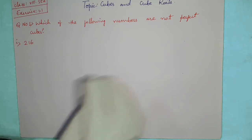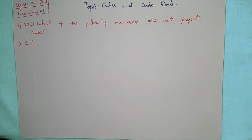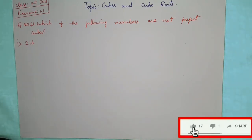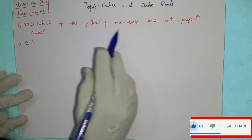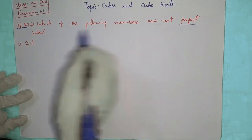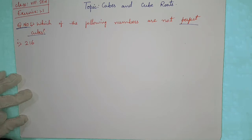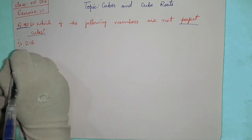Hello everyone, now we are going to see the cubes and cube roots, first exercise 1.1, first question: which of the following numbers are not perfect cubes? In the introduction part we have seen that when prime factorization is done, the powers should always be 3. If powers are not in groups of 3, then it is not a perfect cube.